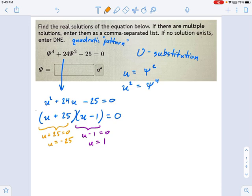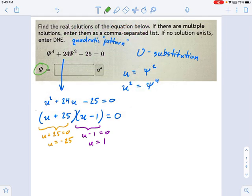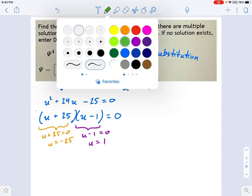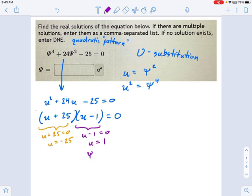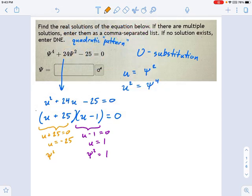So you're about to write these into your answer box. Say, I'm done. I've solved it. But the problem is, we don't want solutions for u. We want solutions for this crazy pitchfork variable right here. So now is the part where you have to undo the u substitution. So you say, okay, well, no problem. That means my pitchfork squared equals 1. And my pitchfork squared equals negative 25.